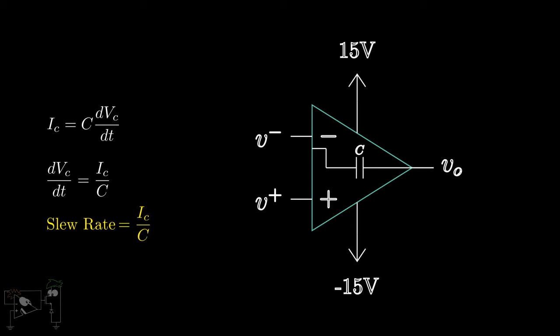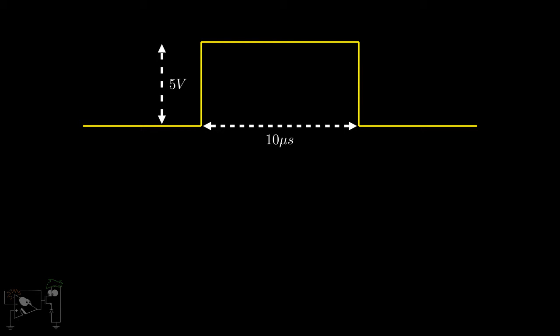Let's see the effect of slew rate on a pulse signal. Suppose we have a pulse of duration 10 microseconds and amplitude 5 volts. Suppose the slew rate of the op-amp is 1 volt per microsecond. Then the output will be a ramp. As the slew rate is 1 volt per microsecond, it will take 5 microseconds to reach 5 volts.